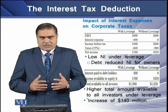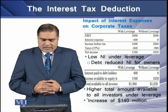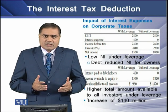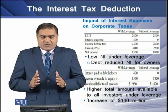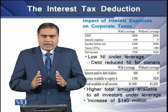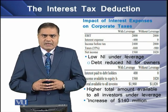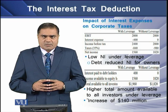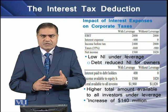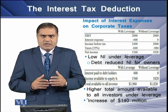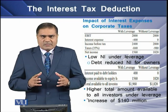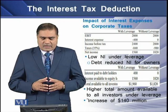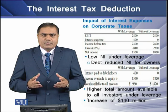For both situations, the earnings before interest and taxes are $2.8 million. For the levered firm, we first deduct the interest expense. After deducting the interest payment from EBIT, the earnings available for tax come to $2.4 million.